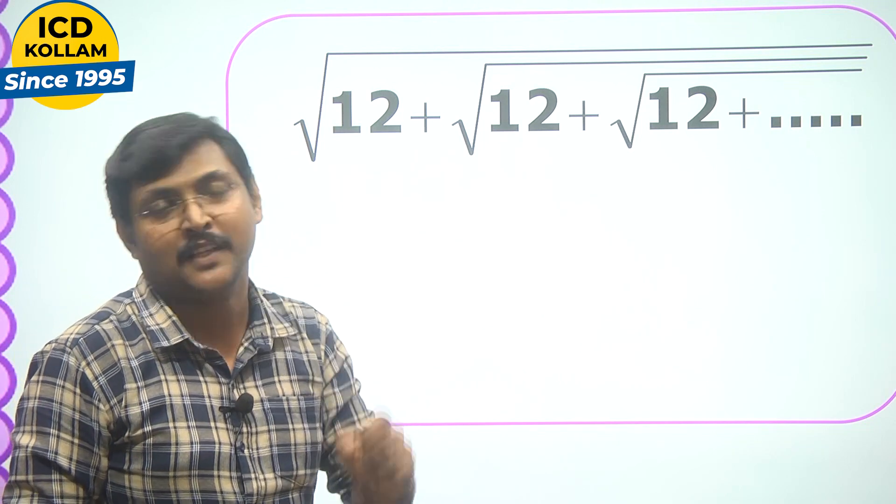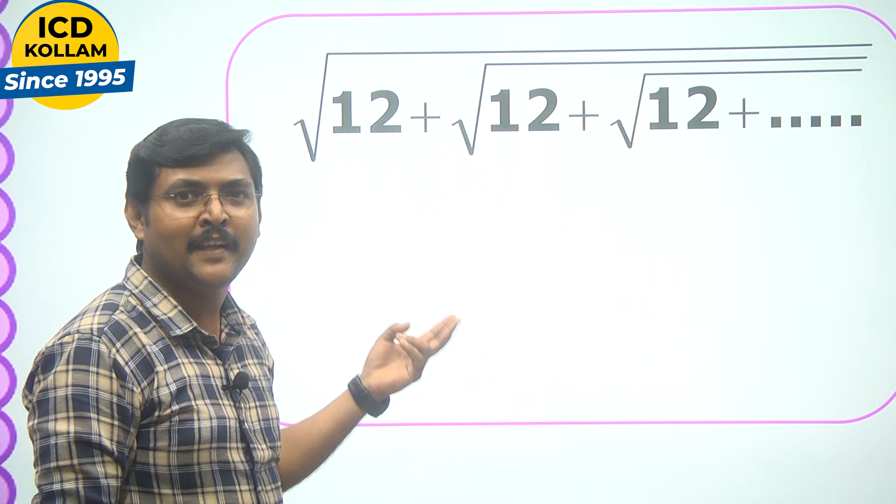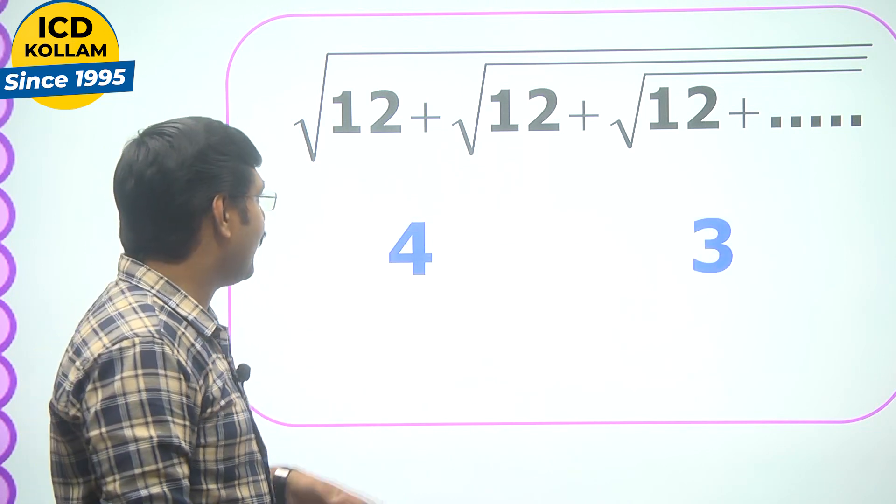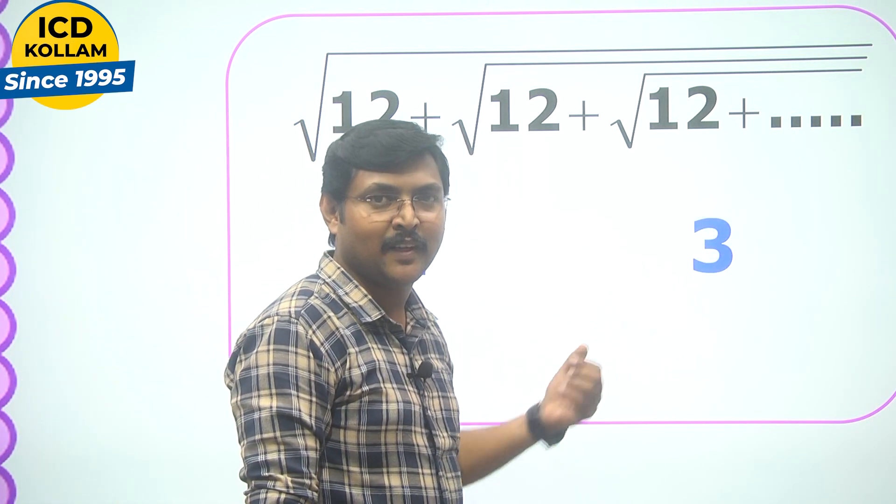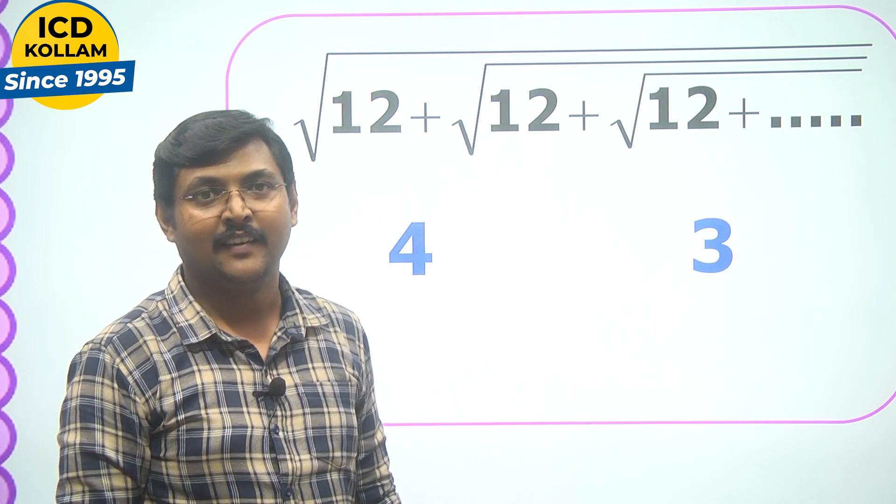First of all, we should find that two numbers. For the number 12, for sure that two numbers will be 4 and 3. Because 4 into 3 is 12 and the difference of 4 and 3 is 1.